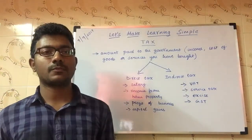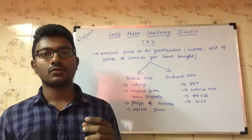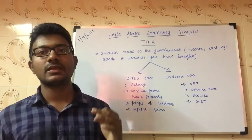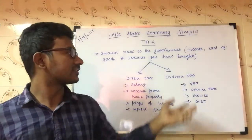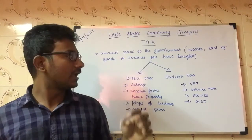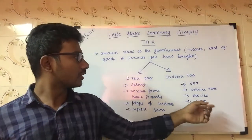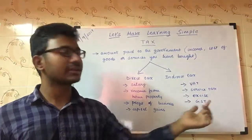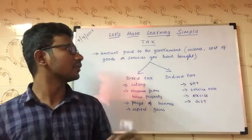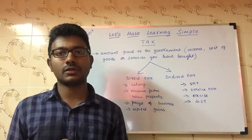Then comes indirect tax. For example, if you buy any product and the cost of that product is 30 rupees, that 30 rupees includes taxes like service tax, safety duty, and education cess paid to the government. What the government did is bring all those under a single category called GST — Goods and Services Tax. We'll talk more about that in upcoming videos.